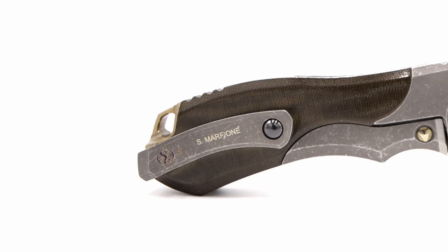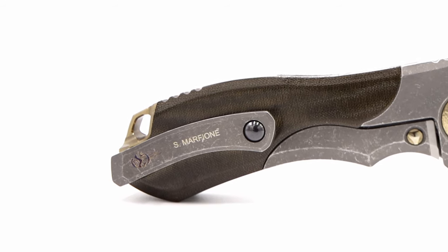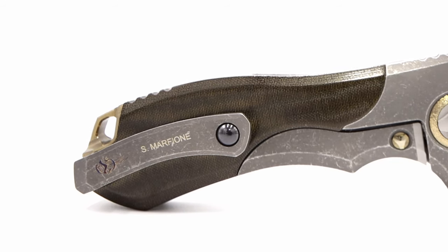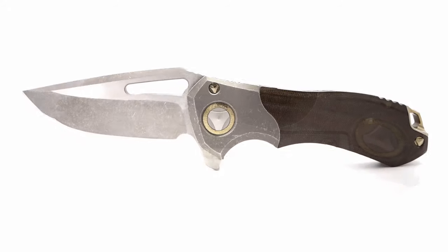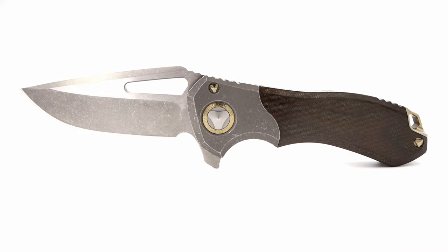The pocket clip is also milled and sculpted from a chunk of titanium and contains a ceramic insert to slide in and out of the pocket with ease. And here is where Sean decided to place his billboarding with a beautifully anodized logo and name, which leaves the blade completely sterile. A highly attractive look.